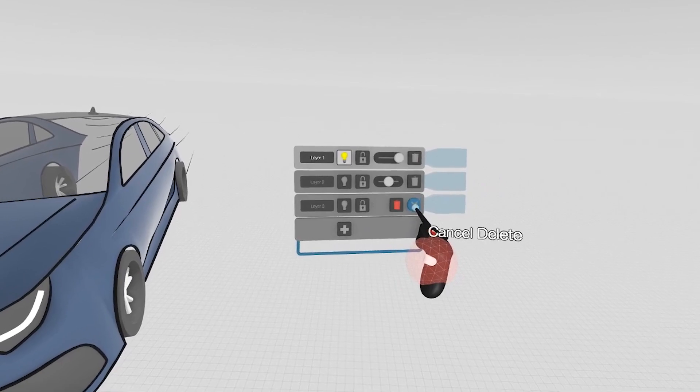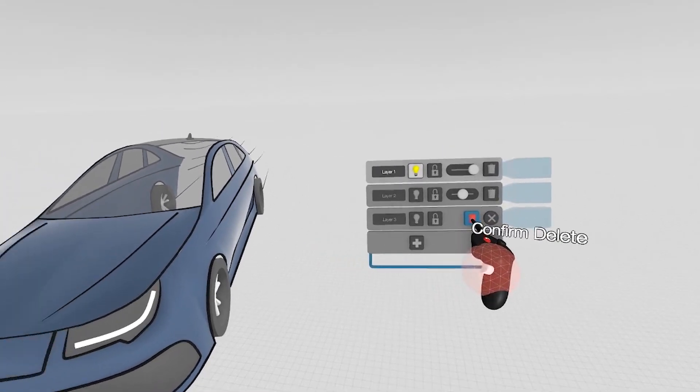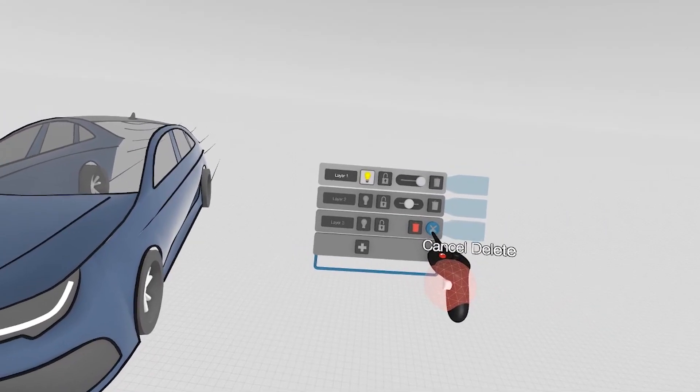You can delete individual layers by clicking delete, and clicking once again on the trash can. You can also cancel that delete.